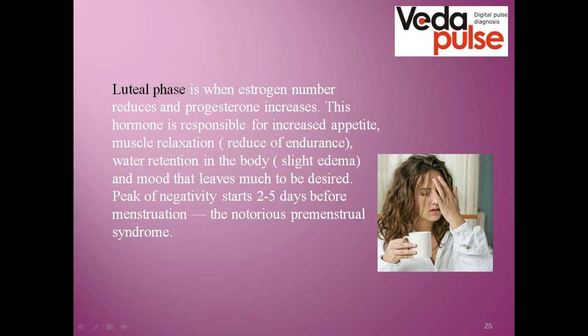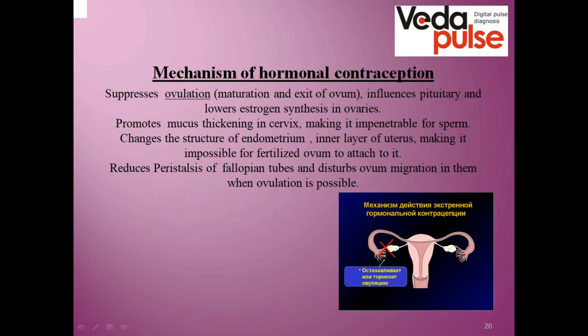Increased progesterone increases appetite, relaxes muscles, reduces workability, can cause water retention and edema, and deteriorates mood. There can be lack of energy and even aggression. Such conditions show up 2–5 days before menstruation and are called premenstrual syndrome. This is explained by hormonal exhaustion — estrogen level decreases, pregnancy didn't happen, so progesterone level also decreases, and the internal tissues and uterus are rejected, causing bleeding.